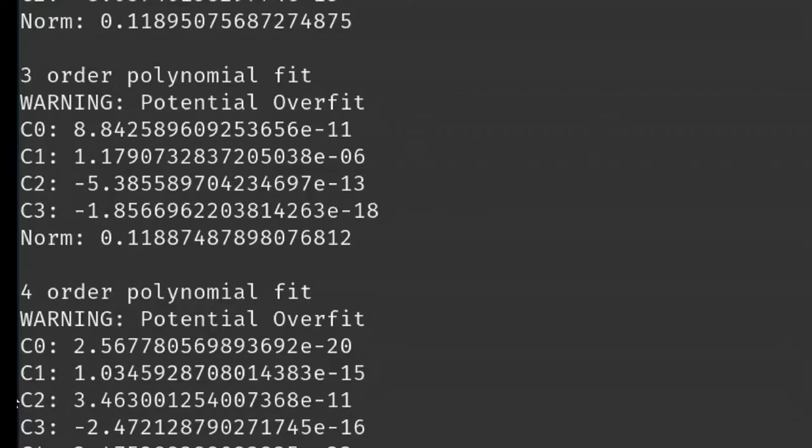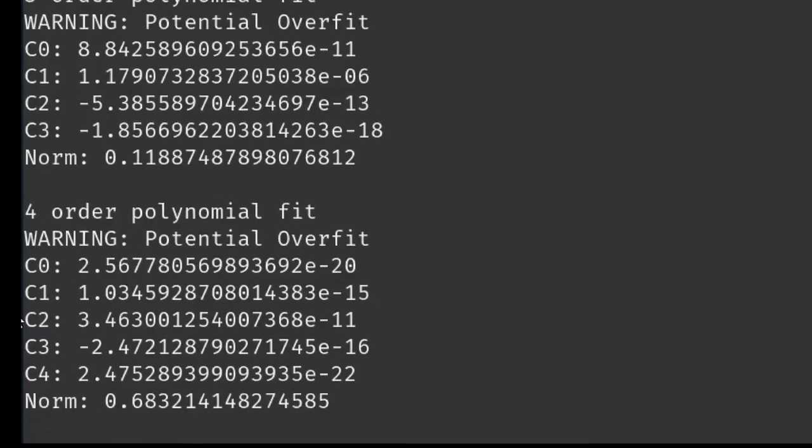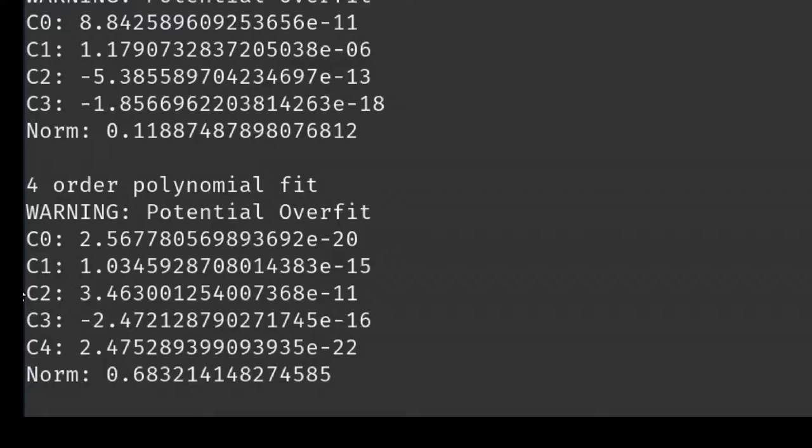But wait, we have this warning in here. We'll get back to that warning in a moment. But if we take a look at the fourth-order polynomial fit just based off of the vector norm, well, our norm is now much larger, indicating that this fit isn't that great. Let's take a look at the plots and see what that all means.